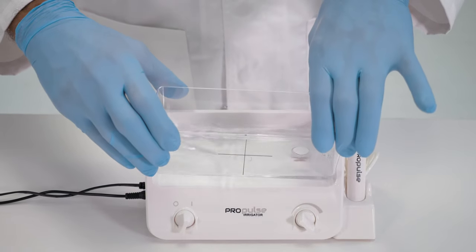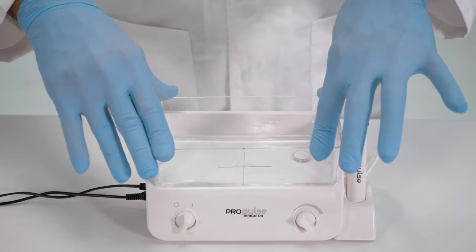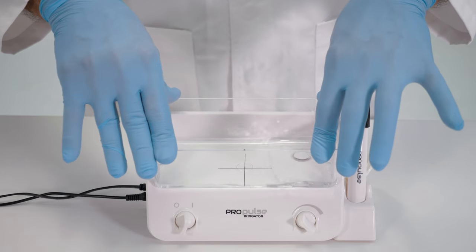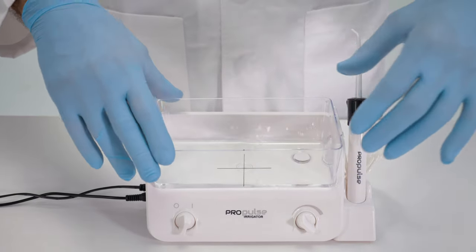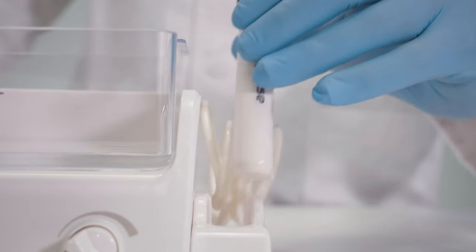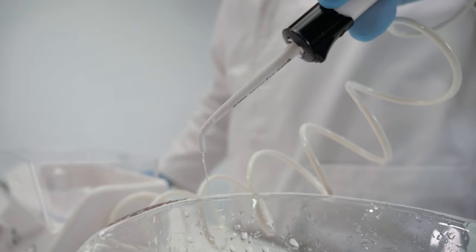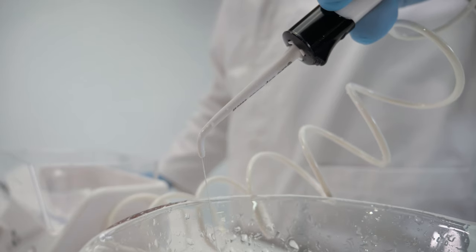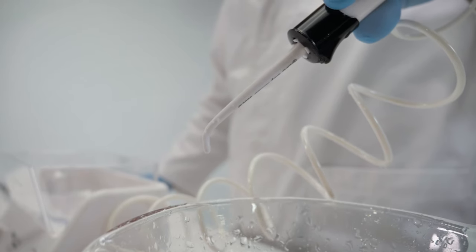To finish the rinsing process, add approximately 100 millimeters of clean warm water into the reservoir. Then, firmly press the reservoir into place. Turn the machine on and ensure that all the decontamination solution is washed from the irrigator by rinsing it through and discarding.